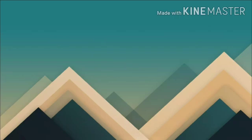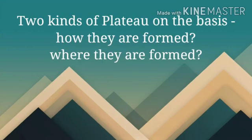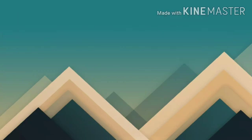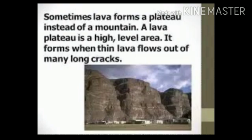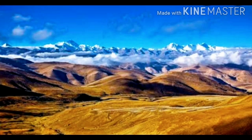The Plateau of Tibet, to the north of the Himalayas, is the highest plateau in the world. Plateaus are categorized in two ways: how they are formed and where they are formed. A tectonic plateau is formed when a part of the earth's surface is pushed up but not wrinkled — for example, the Plateau of Tibet, which is totally flat on top with no curves.